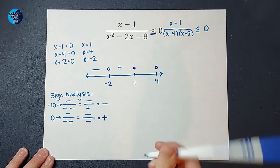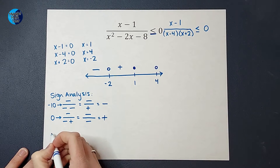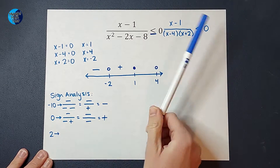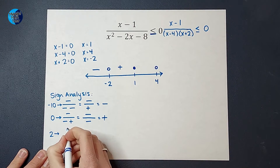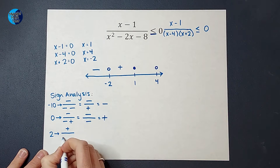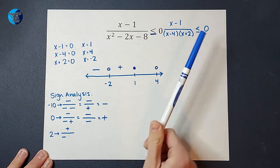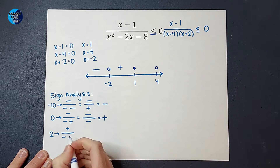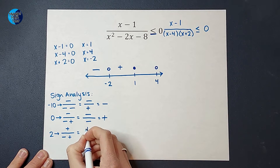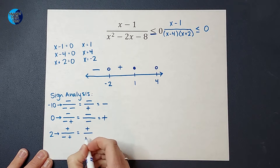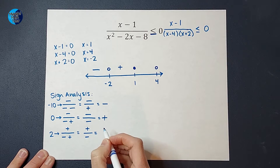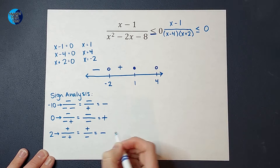What about from 1 to 4? Let's pick 2. Plugging in 2: 2 minus 1 gives a positive on top. 2 minus 4 gives a negative on the bottom, and 2 plus 2 gives a positive on the bottom. So I have a positive on top and a negative times a positive on the bottom, which is negative. Positive divided by negative is negative. So this region is negative.